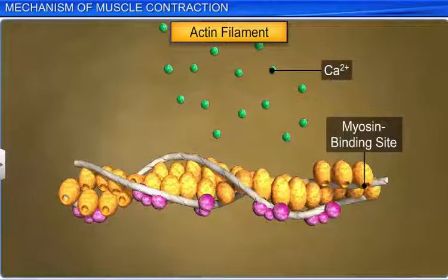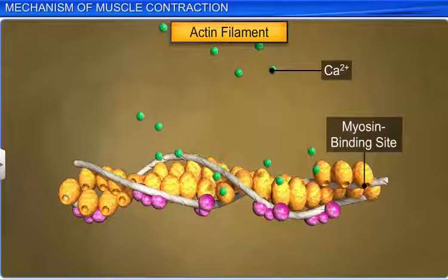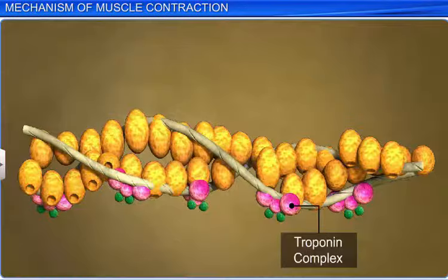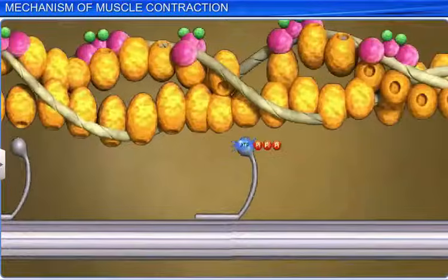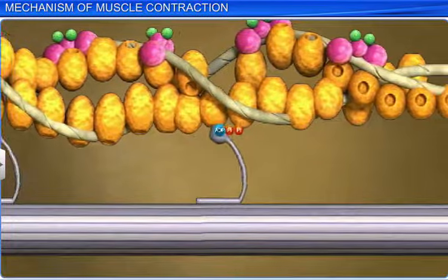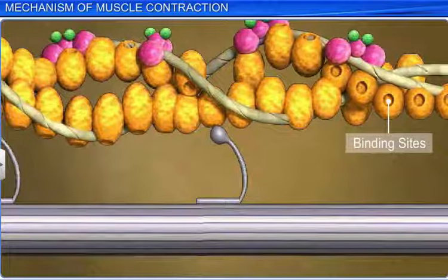The calcium ions further bind to a subunit of troponin on the actin filaments, which causes the troponin to change conformation and move the tropomyosin. This unmasks the active sites on actin for myosin to bind to it, after consuming energy released by ATP hydrolysis.